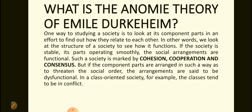One way to study a society is to look at its component parts in an effort to find out how they relate to each other. In other words, we look at the structure of a society to see how it functions. If the society is stable, its parts operating smoothly, the social arrangements are functional. Such a society is marked by cohesion, cooperation and consensus. But if the component parts are arranged in such a way as to threaten the social order, the arrangements are said to be dysfunctional. In a class-oriented society, for example, the classes tend to be in conflict.